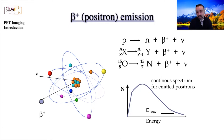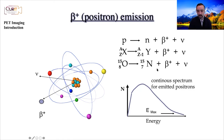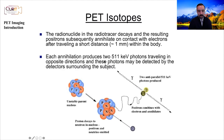We don't image the neutrino — it's very hard to measure neutrinos. The practical implication of neutrino emission is that the final kinetic energy is shared between the positron and the neutrino, so the positron can be emitted with a range of kinetic energies. After emission, the positron travels a little bit within tissue and is slowed down. This travel distance is called the positron range — for example, around half a millimeter.